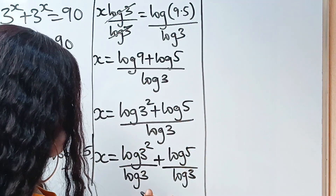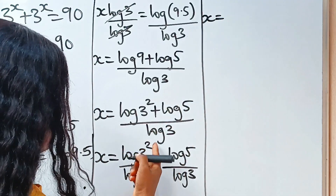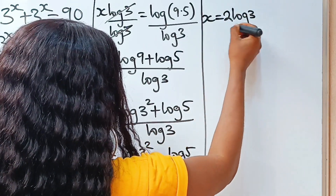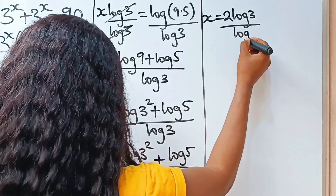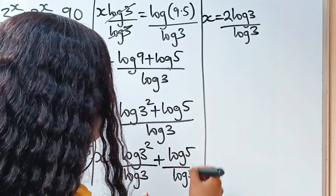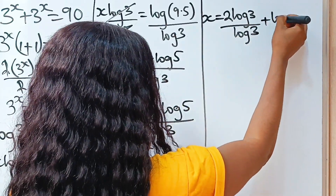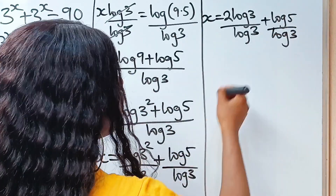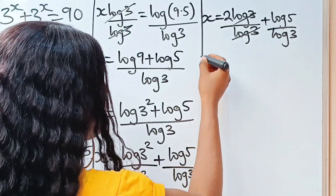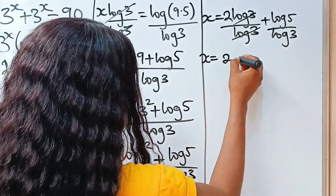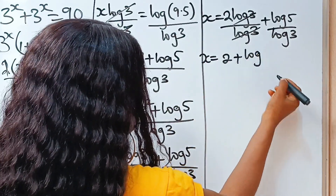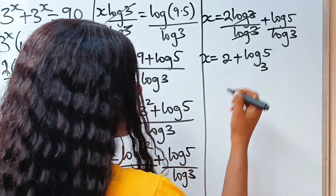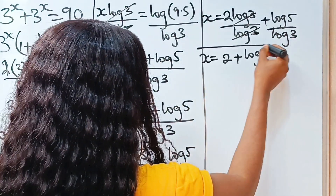So at this point, we have that x is equal to — let's bring this down as usual. So we have 2 log 3 over log 3, plus log 5 over log 3. Log 3 divided by log 3 gives 1, and we have that x is equal to 2 plus log 5 over log 3, which is the same thing as log 5 base 3. Now this is our x.